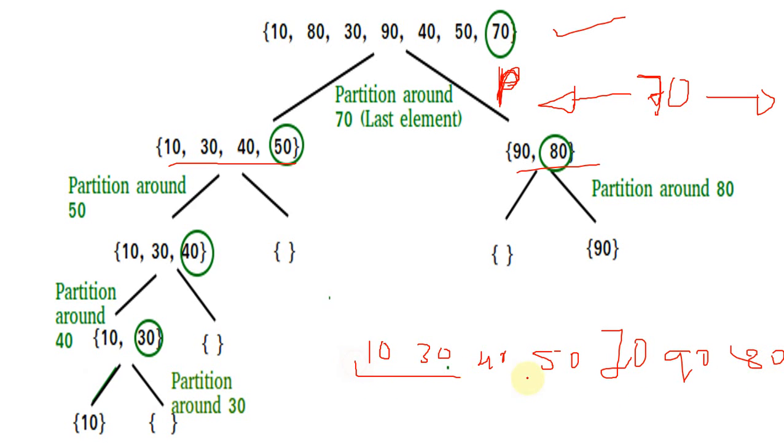We cannot say the list left to the 70 and the elements right to the 70 are sorted. Generally they are not sorted. Luckily 10, 30, 40, 50 are sorted but 90 and 80 are not. So around 70, the elements left to the 70 are surely less than 70 and right to the 70 are greater than 70.